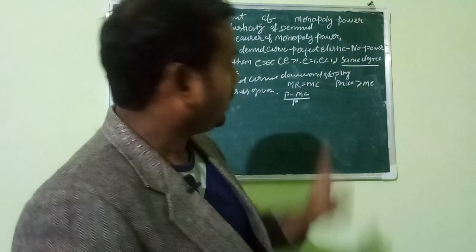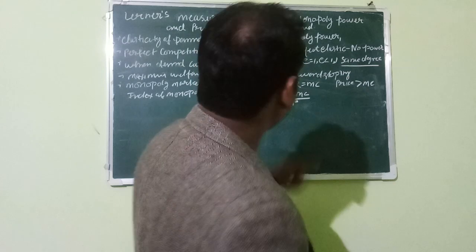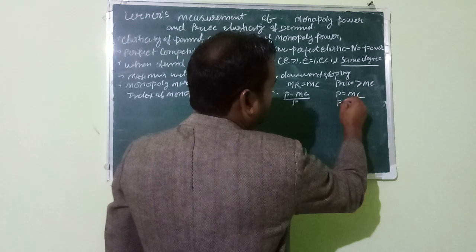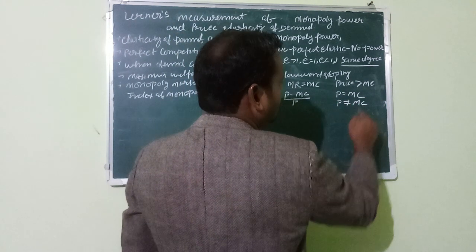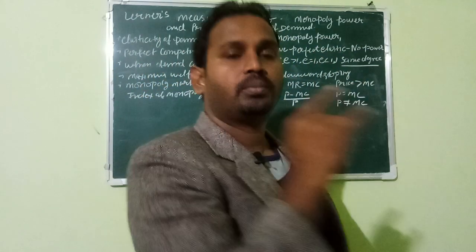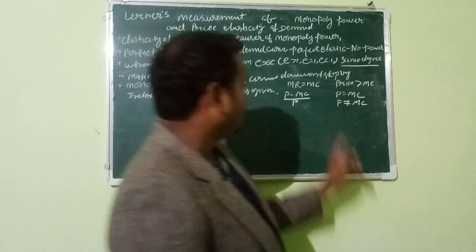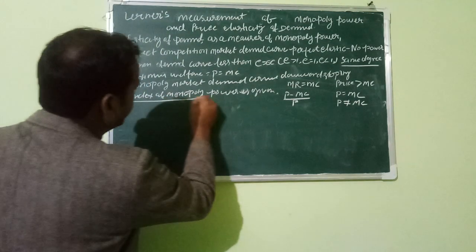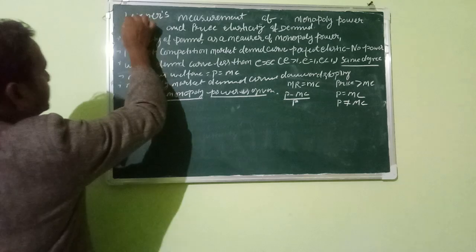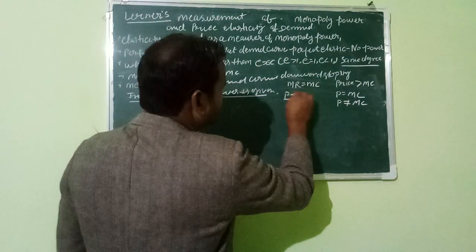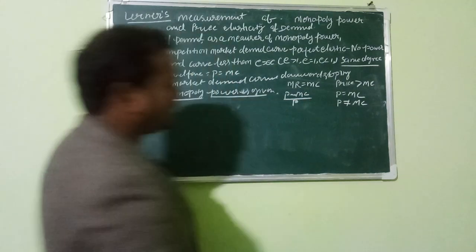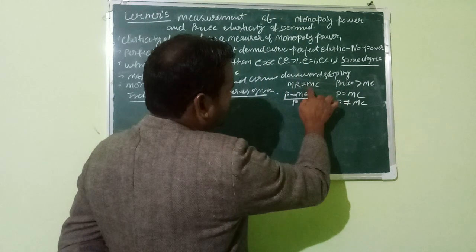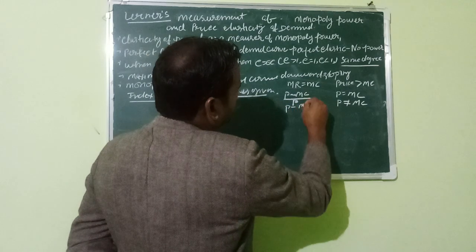In perfect competition, price is equal to marginal cost. But in the monopoly market, price does not equal marginal cost — and that difference is called the degree of monopoly power. The index of monopoly power is given by the Lerner index formula: (P - MC) / P, where P is price and MC is marginal cost. We can also substitute marginal revenue for marginal cost, since in perfect competition price equals marginal revenue.